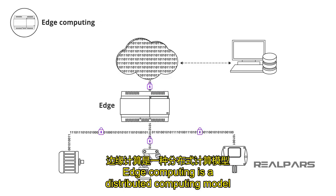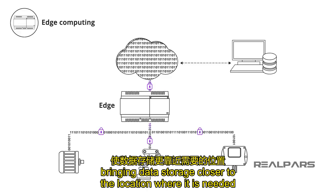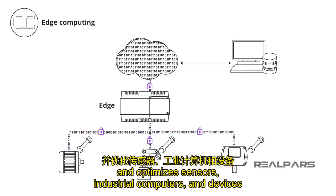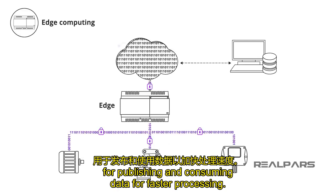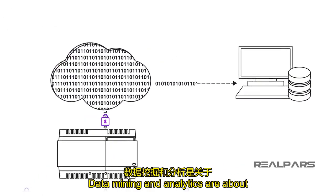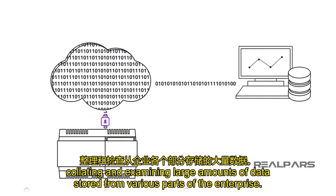Edge computing is a distributed computing model, bringing data storage closer to the location where it is needed, and optimizes sensors, industrial computers, and devices that are part of the IIoT system for publishing and consuming data for faster processing. Data mining and analytics are about collating and examining large amounts of data stored from various parts of the enterprise.